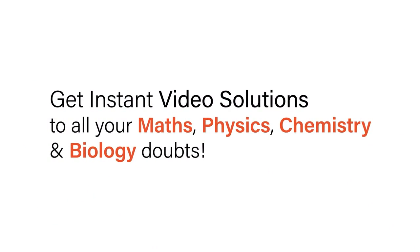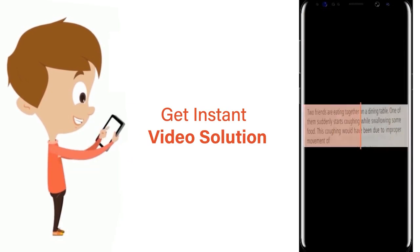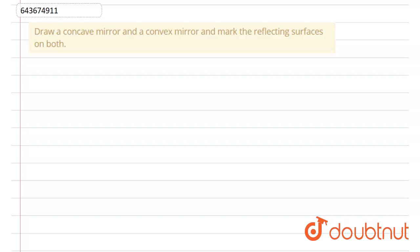With Doubtnet, get instant video solutions to all your math, physics, chemistry, and biology doubts. Just click the image of the question, crop the question, and get an instant video solution. The question is: draw a concave mirror and a convex mirror and mark the reflecting surfaces on both.